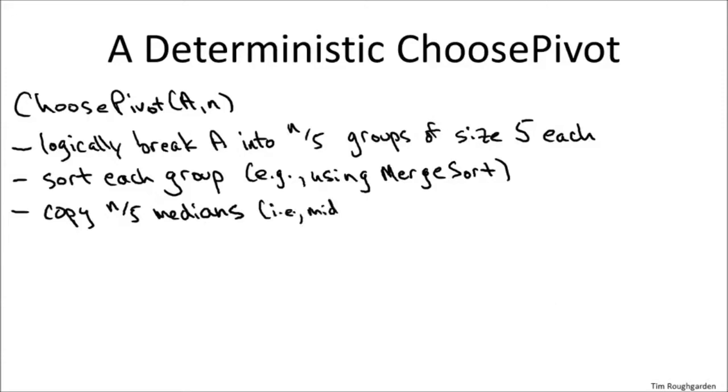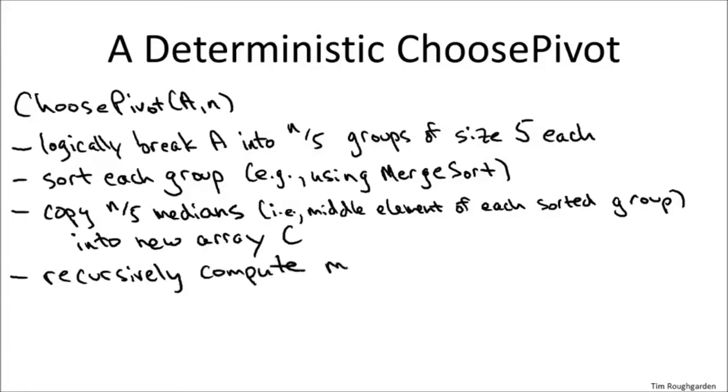Here are the details. The first step isn't really something you actually do in the program, it's just conceptually. So logically we're going to take this array capital A, which has n elements, and we're going to think of it as comprising n over five groups with five elements each. So if n is not a multiple of five, obviously there will be one extra group that has size between one and four. Now for each of these groups of five, we're going to compute the median, so the middle element of those five. Now for five elements, we may as well just invoke our reduction to sorting. We're just going to sort each group separately and then use the middle element, which is the median.